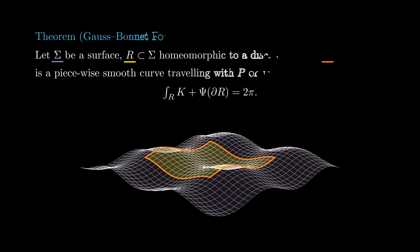Now we are ready to talk about the Gauss-Bonnet formula. It states that if we have a region R in a surface, homeomorphic to a disk, bounded by a piecewise smooth curve, then the integral of the Gauss curvature over R plus the total geodesic curvature of its boundary equals 2pi, where we consider its boundary as being traveled with R on its left.